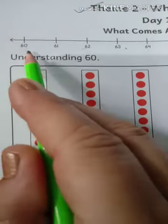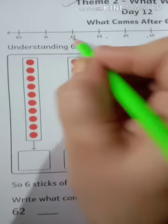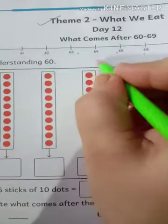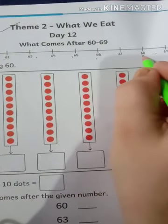First you have to see the number line. This is 60, 61, 62, 63, 64, 65, 66, 67, 68, and 69. This is our number line from 60 to 69.